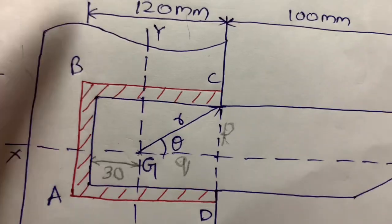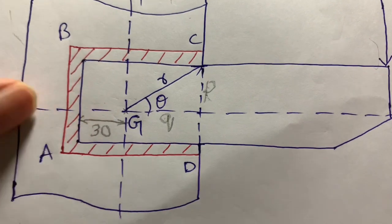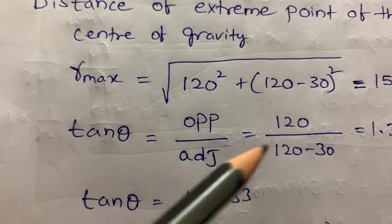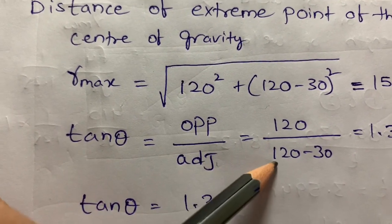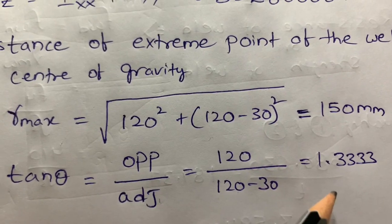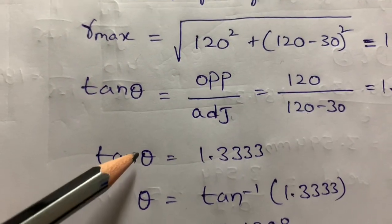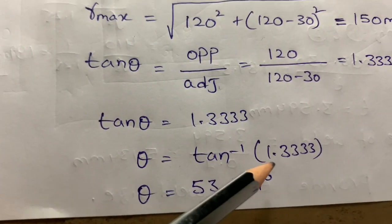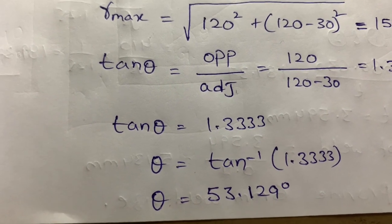Next, I need to calculate theta, which is the angle. Using tan θ = opposite side divided by adjacent side: opposite is 120 (P value), and adjacent is 120 minus 30 = 90 (Q value). Calculating this gives tan θ = 1.333, so θ = tan⁻¹(1.333) = 53.129 degrees.